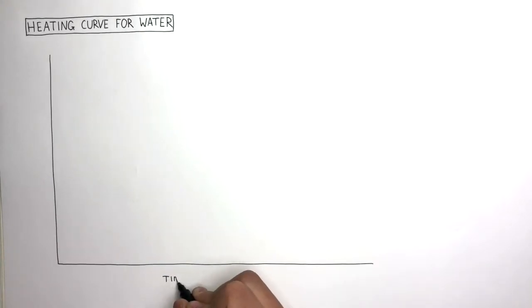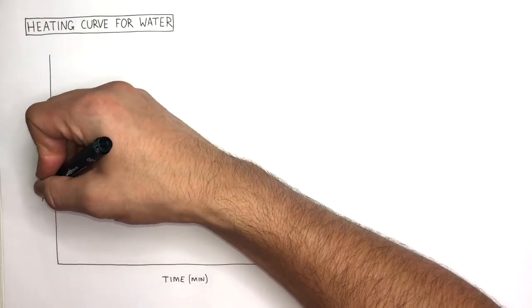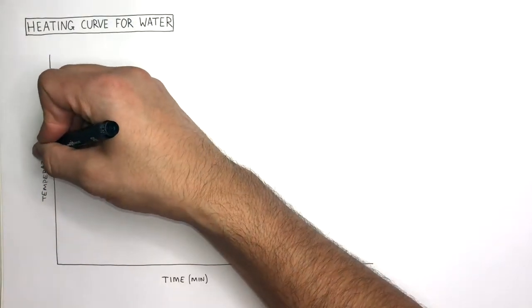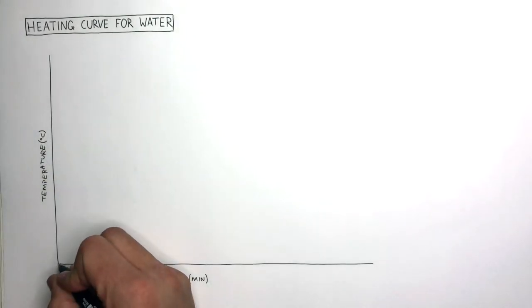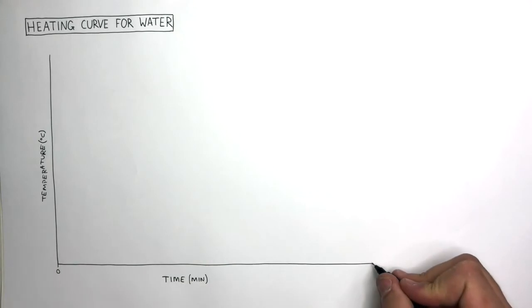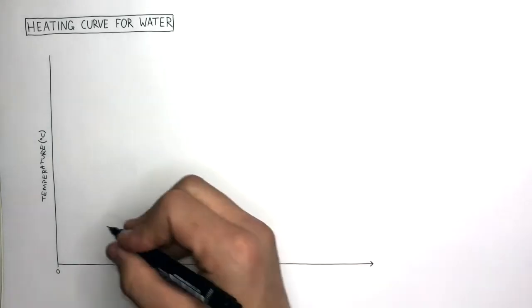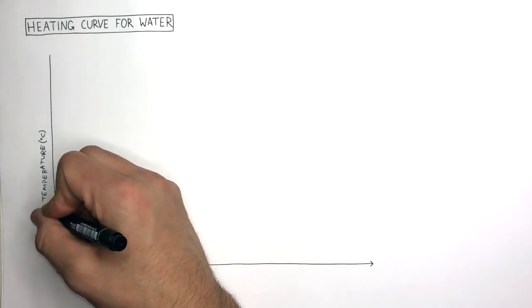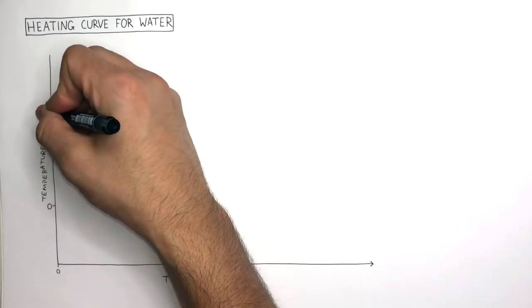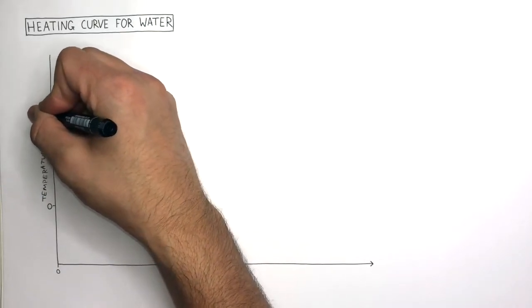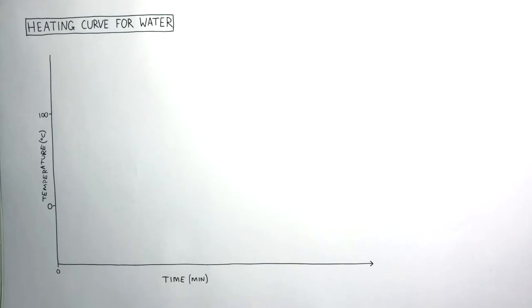On the x-axis is time and the unit is minutes. On the y-axis is temperature and the unit is degrees Celsius. The time starts at zero minutes and increases to the right. On the y-axis, zero degrees C marks the melting point of ice to water, and 100 degrees C marks the boiling point from water to water vapor.